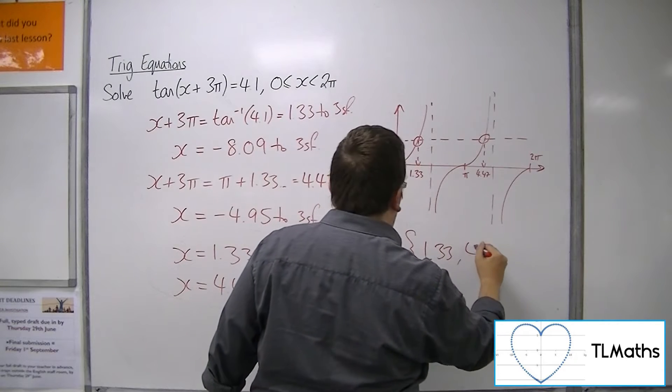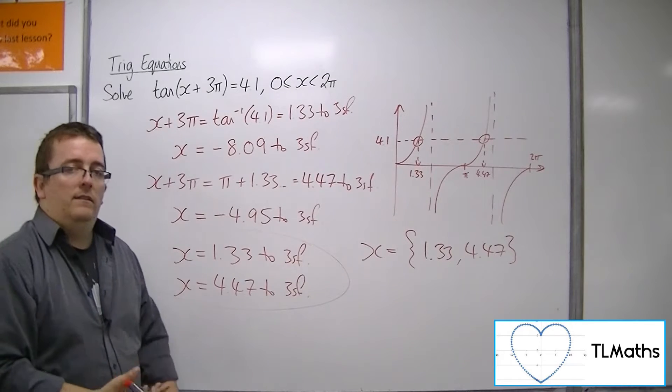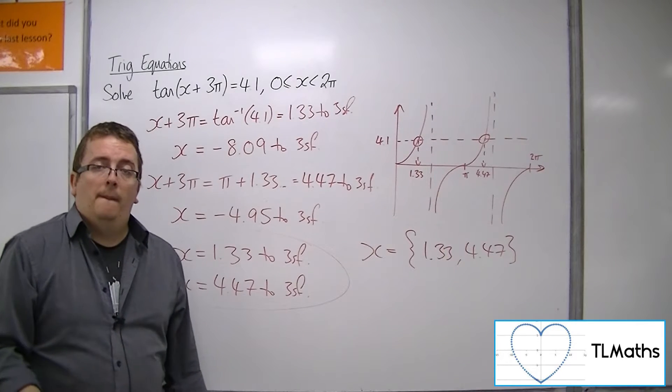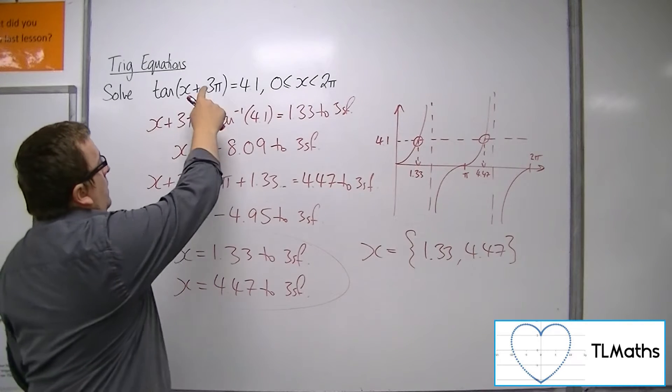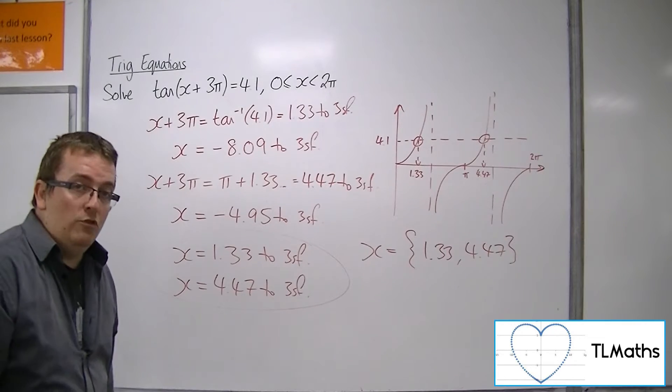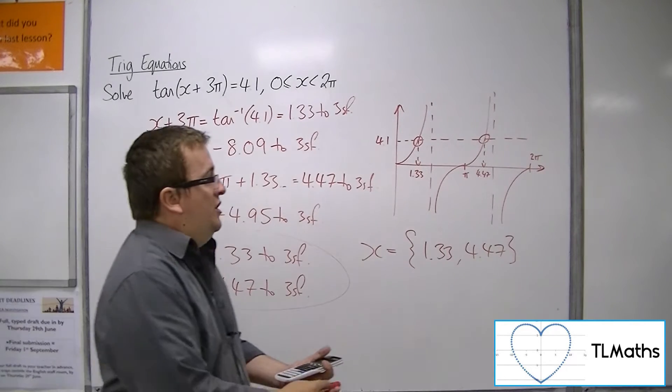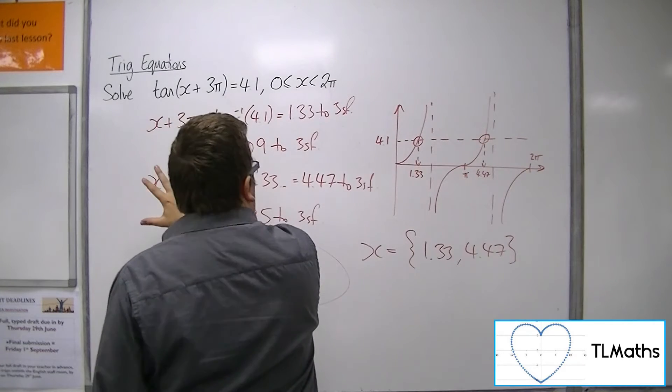Now, the reason for this is that tan has a period of π. And what I've done is I've done a translation by the vector (-3π, 0), which has just picked up this curve and shifted it 3π to the left.